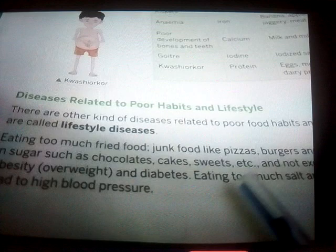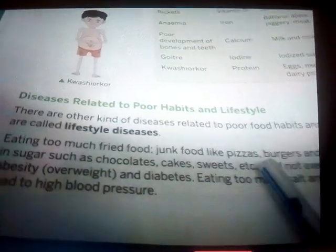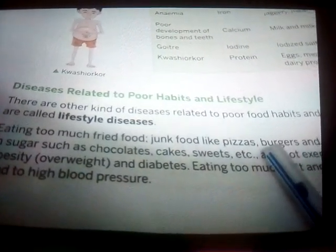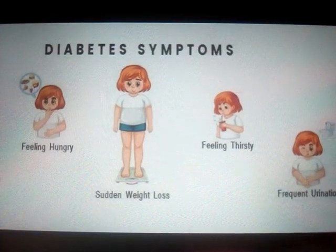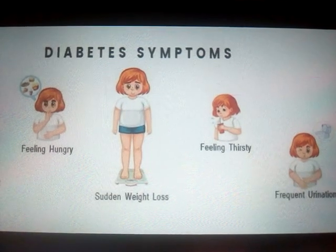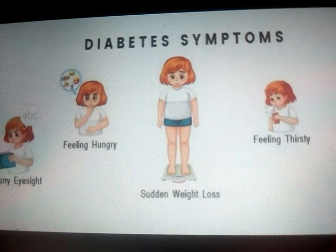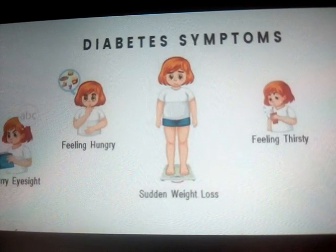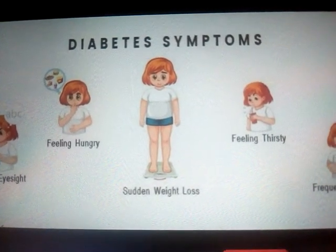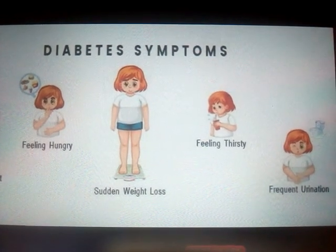Diabetes is a disease in which your blood sugar level — that is, blood glucose level — becomes too high. You get glucose from the food you eat. The symptoms of diabetes include blurry eyesight, feeling hungry often, sudden loss of weight, always feeling thirsty, and frequent urination.